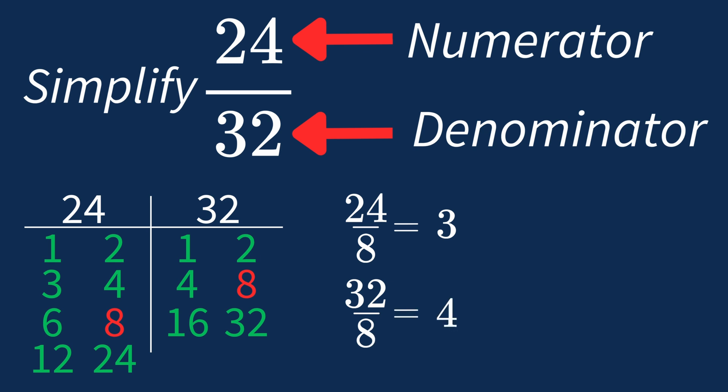So after dividing, the simplified fraction is 3 over 4. And we know that 3 over 4 is in its simplest form, because the only common factor between 3 and 4 is 1. And when 1 is the largest common factor, we know that our fraction has been simplified.